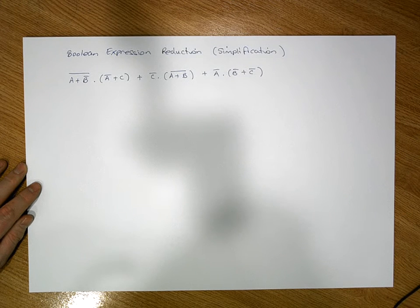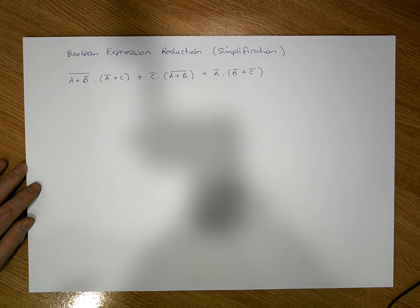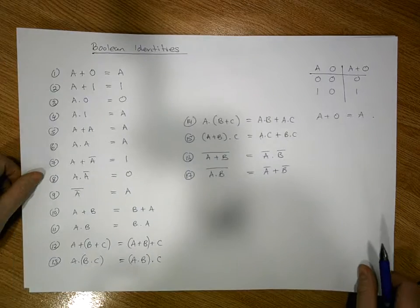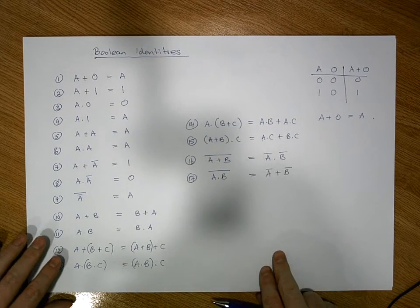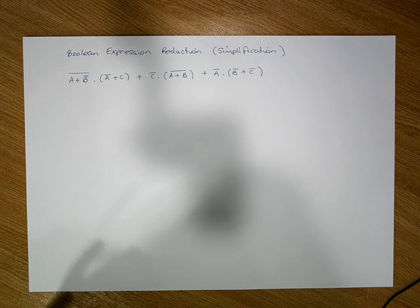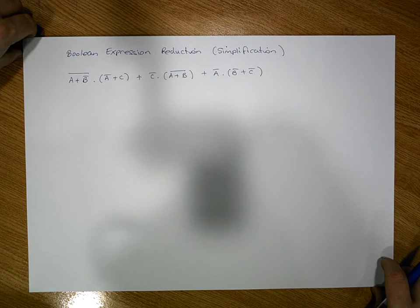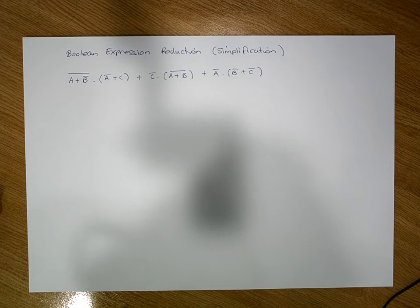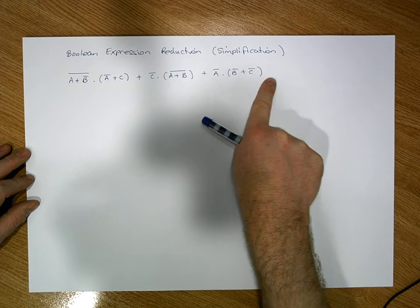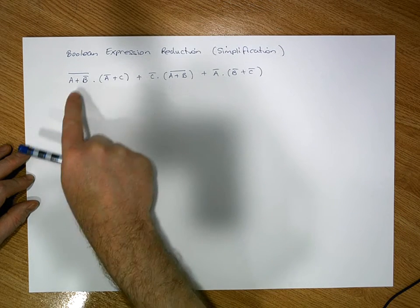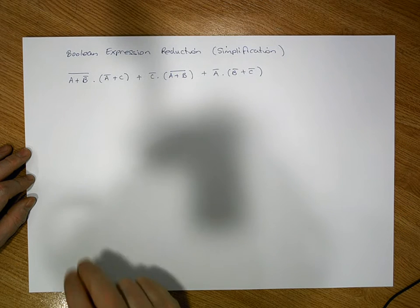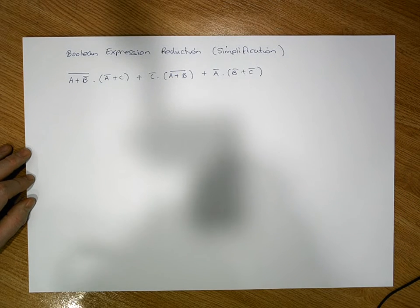The Boolean expression we're going to deal with today looks pretty complicated, but what we're going to do is work through it in a number of stages and passes, applying our identities defined in one of our previous videos. The first couple of passes are just tidying-up passes — distributing terms across ORs, breaking bars and flipping signs using De Morgan's laws, then applying the commutative and associative laws to order terms as a, a-bar, b, b-bar, c, c-bar, and so on.